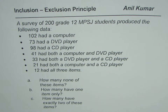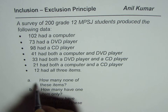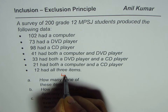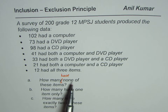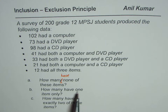Based on this data, there are three questions. First, how many students had none of these items? Second, how many have one item only? And third, how many have exactly two of these items? These are the three questions based on the information given.